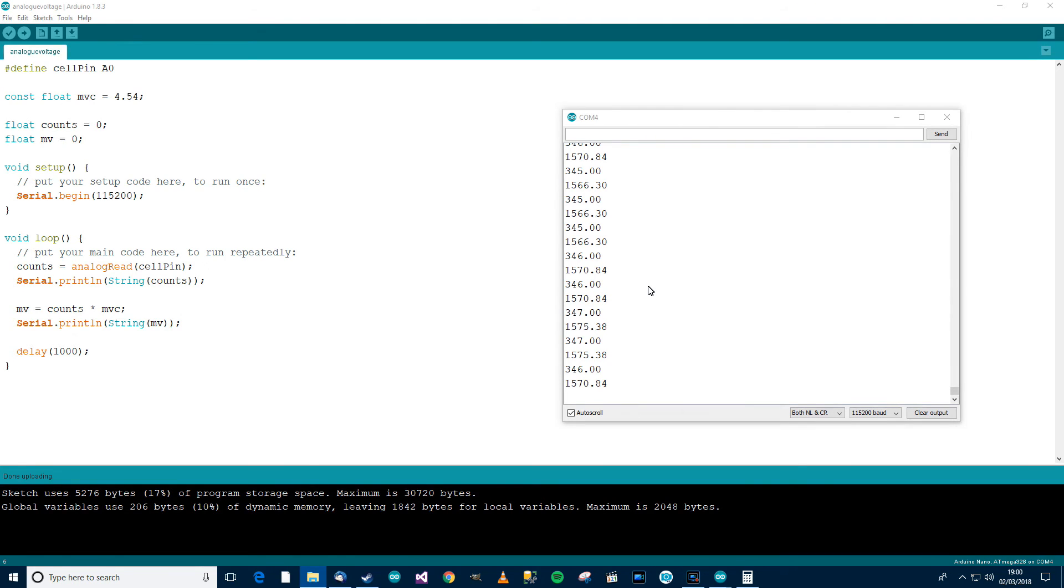And you can see over here that the voltage is 1570 millivolts, which is pretty much spot on. So this is how to measure voltage into the Arduino that is less than 5 volts. So if your voltage is more than 5 volts, like I said at the very start of this video, there's an additional step. And the additional step is called a voltage divider, and I'll discuss voltage dividers in the next video. Thanks for watching. Bye.